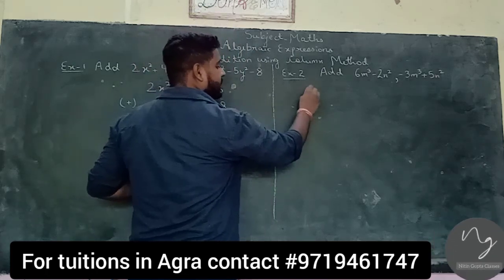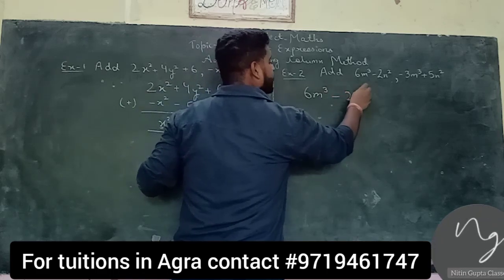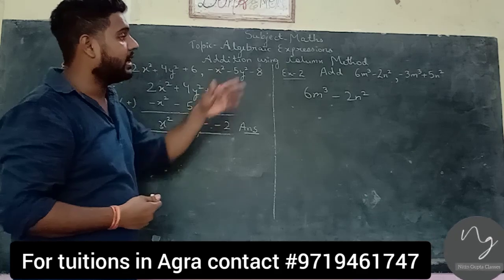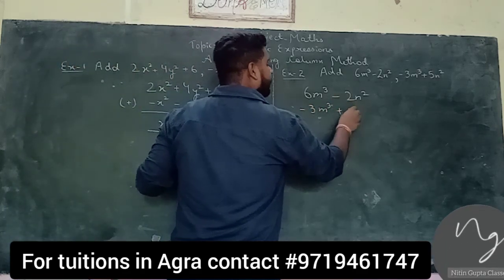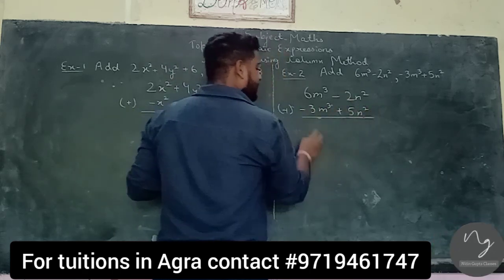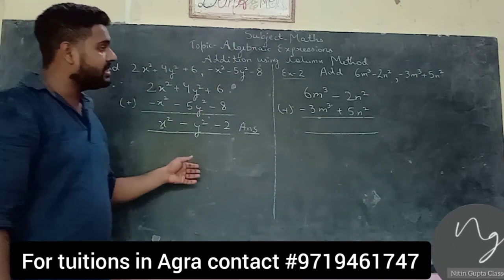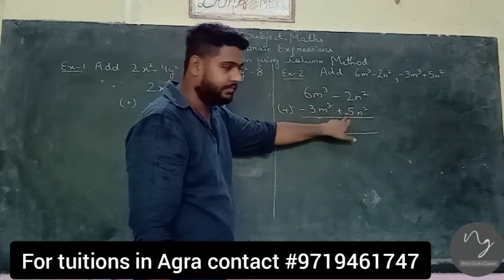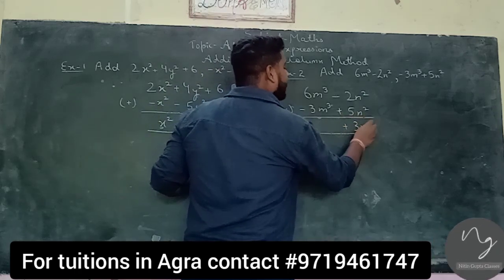The first expression is 6nq minus 2n squared, and the second expression is minus 3nq plus 5n squared. For addition, the first coefficient is minus 2, plus 5. So 5 minus 2, the answer is 3n squared.